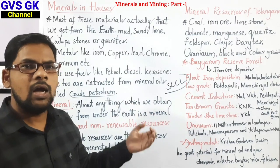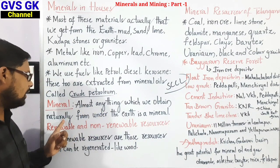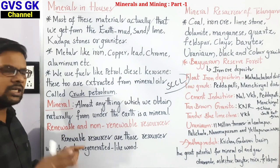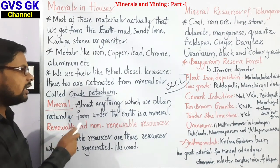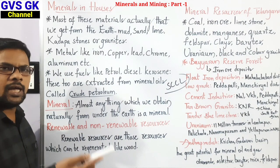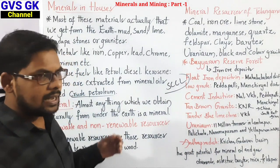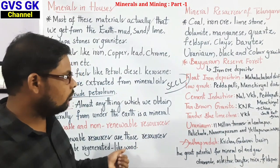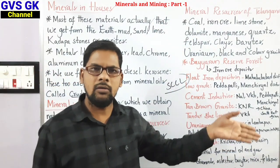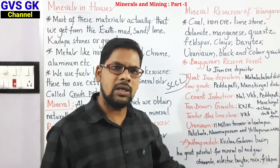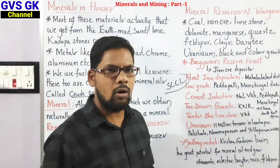In this session, we discussed what is meant by a mineral — almost anything obtained naturally from under the earth is a mineral. Minerals are divided into two categories: renewable resources, which can be regenerated like wood and water; and non-renewable resources, which cannot be regenerated, such as iron, gold, silver, and diamonds — once exhausted, they cannot be recovered.